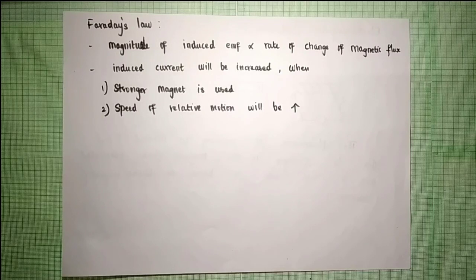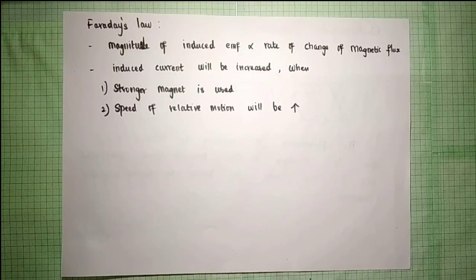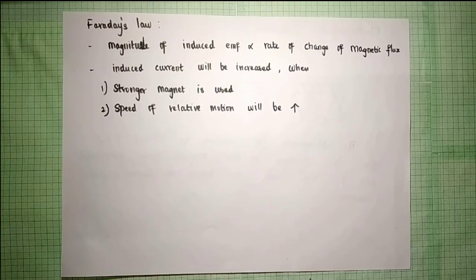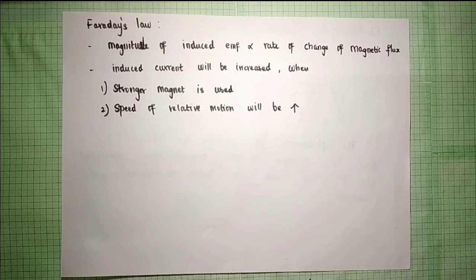The induced current will increase if: a stronger magnet is used, increasing the magnetic flux; or if the speed of relative motion is increased — moving the magnet forward or in reverse faster. Increasing the speed also increases the induced current.